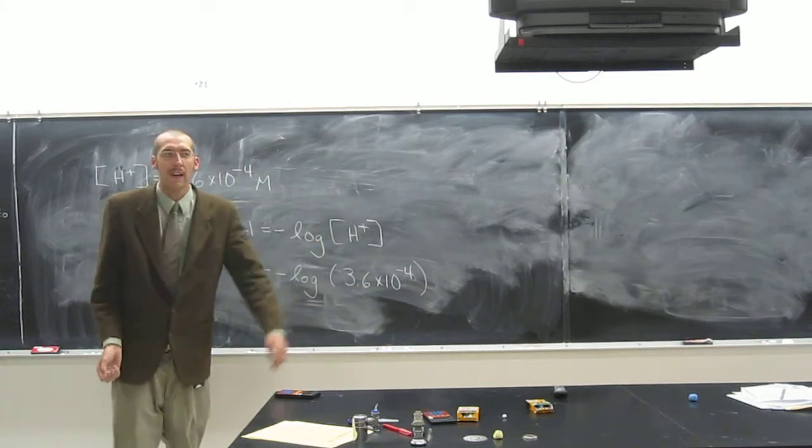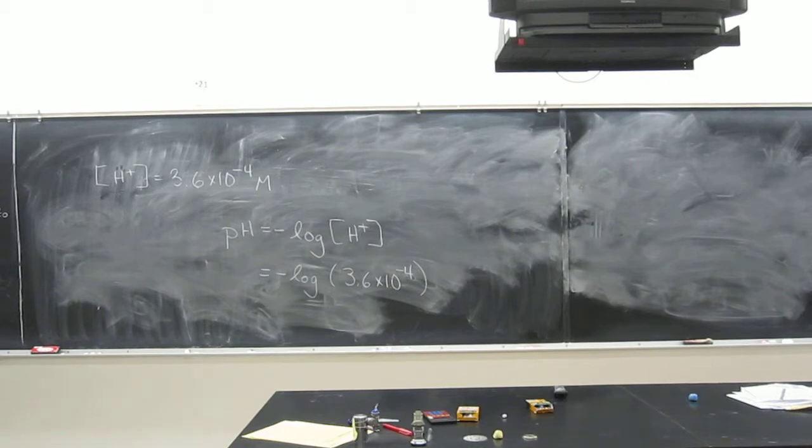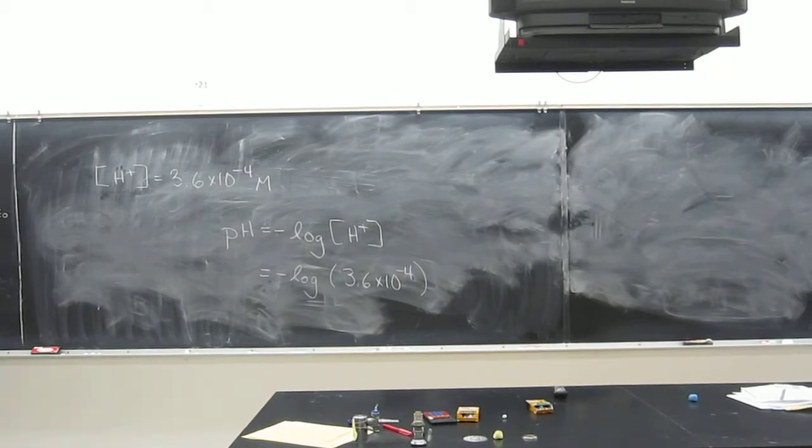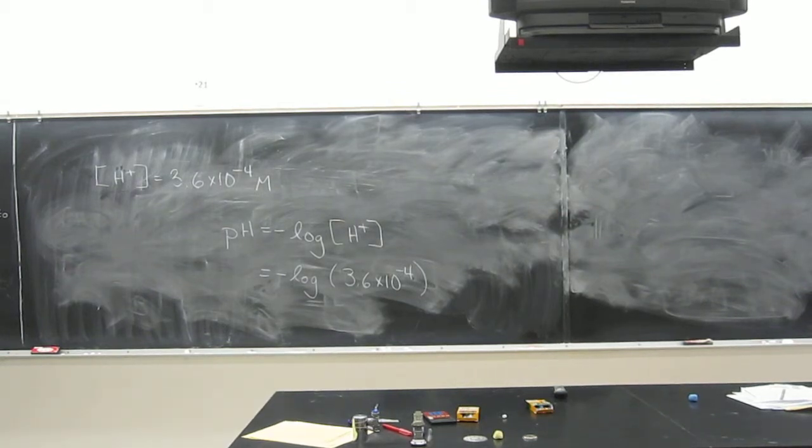Okay, pH doesn't have units, just pH units. So in this calculator, which is kind of janky relative to mine, you do 3.6, and then you put exponent, then you put 4, and then negative, enter, then log that, and then multiply that by negative 1.